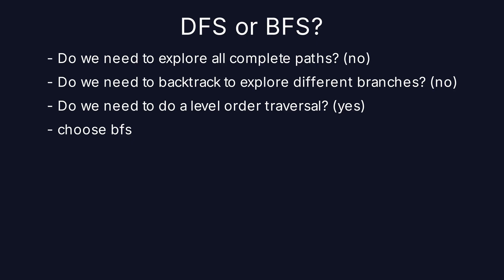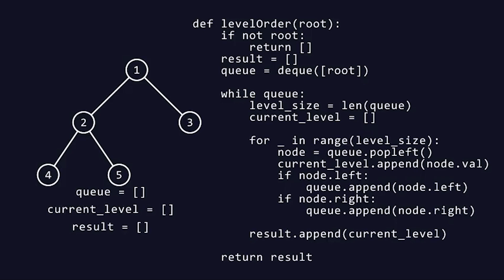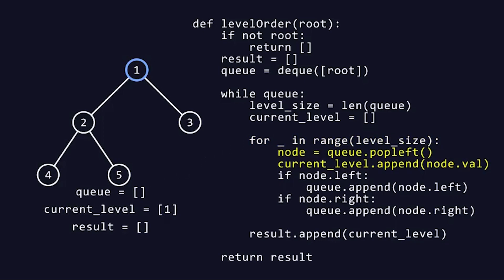Now that we've decided on BFS, let's write the function for it. Here is our levelOrder function. We start by defining a function named levelOrder that takes one parameter, root, the root node of a binary tree. If root is None, it means the tree is empty, so the function returns an empty list. Next, the function initializes two important variables: result, an empty list that will hold the final output as a list of lists, and queue, initialized with the root node inside a deque. This queue will help us perform a level order, or breadth first, traversal of the tree.